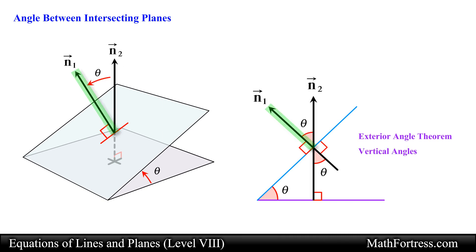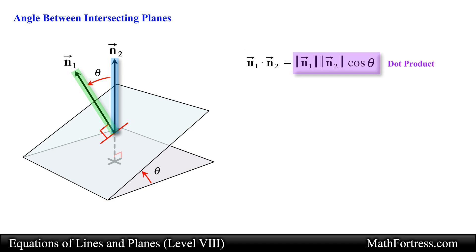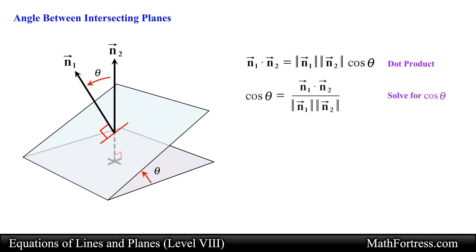Specifically, if vector n sub 1 and vector n sub 2 are normal to two intersecting planes, then the angle theta between the normal vectors is equal to the angle between the two planes and can be found by using the geometric definition of the dot product. In this case the dot product between vector n sub 1 and vector n sub 2 is equal to the magnitude of vector n sub 1 times the magnitude of vector n sub 2 times the cosine of the angle between the vectors. From here we simply solve for cosine of theta to obtain the expression which can be used to find the angle between two intersecting planes.